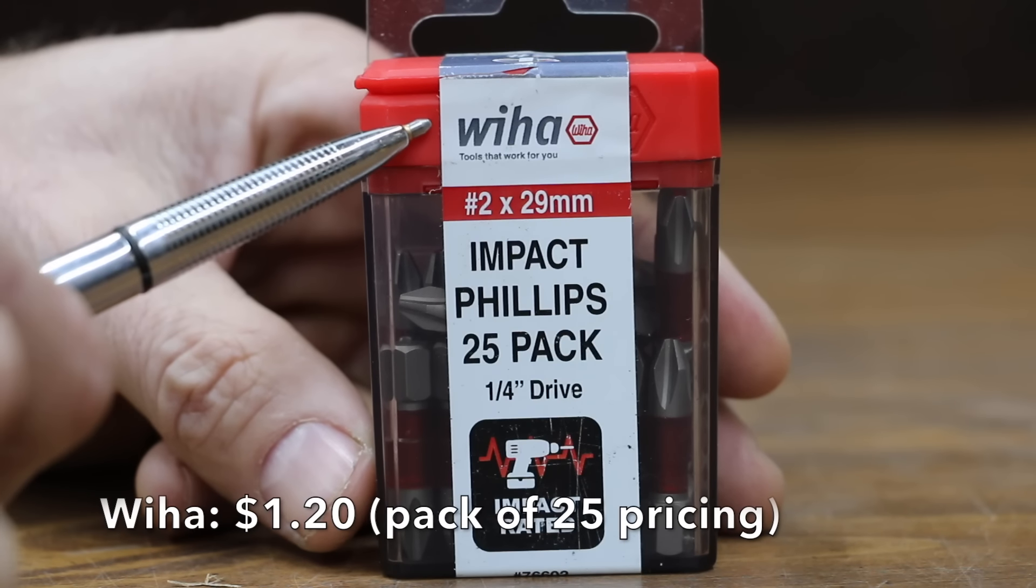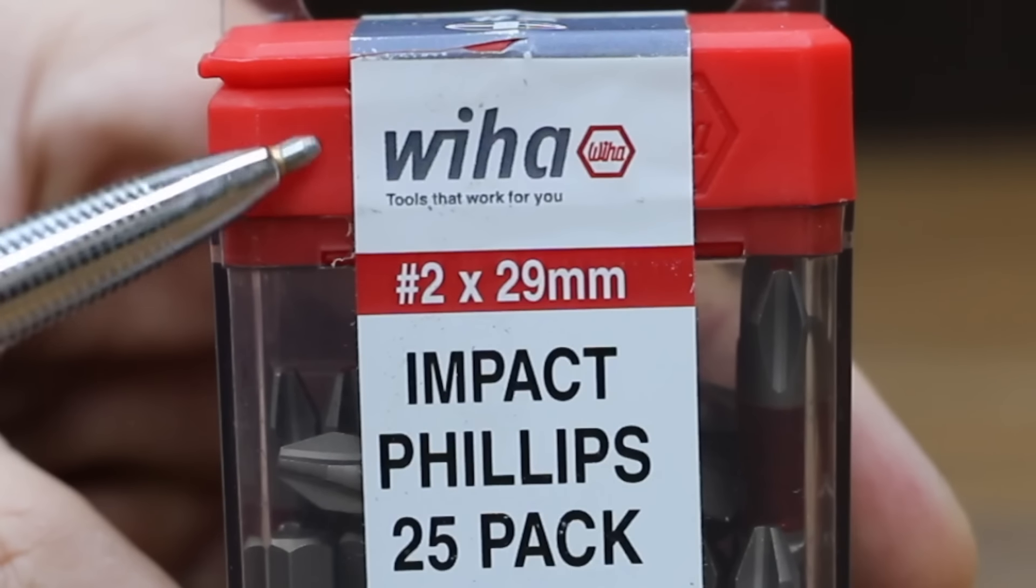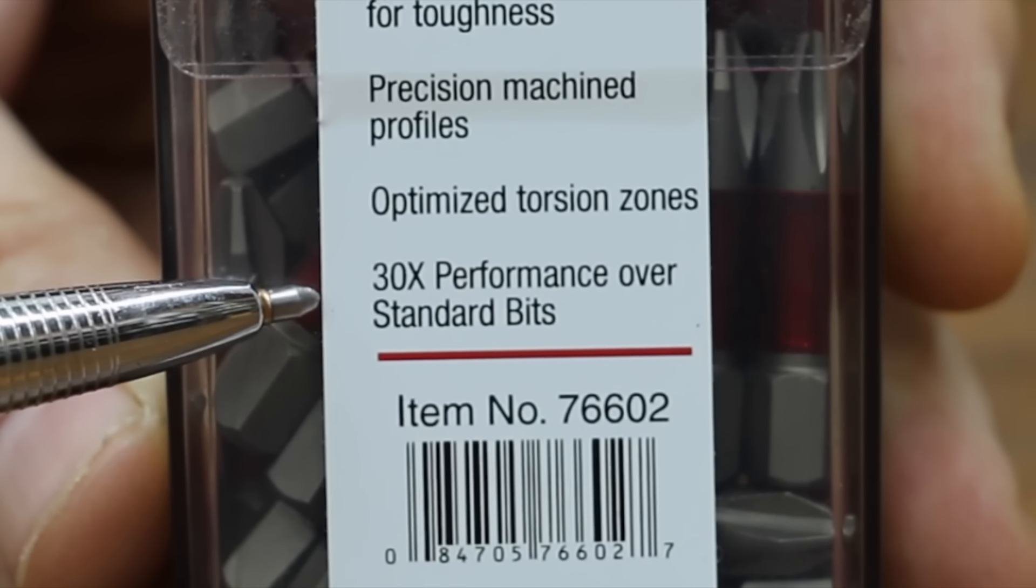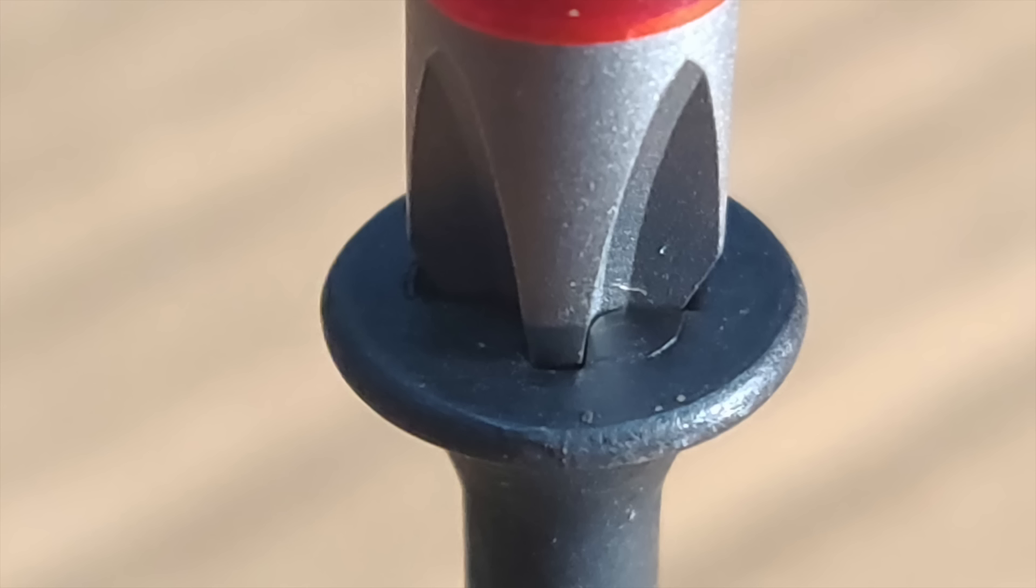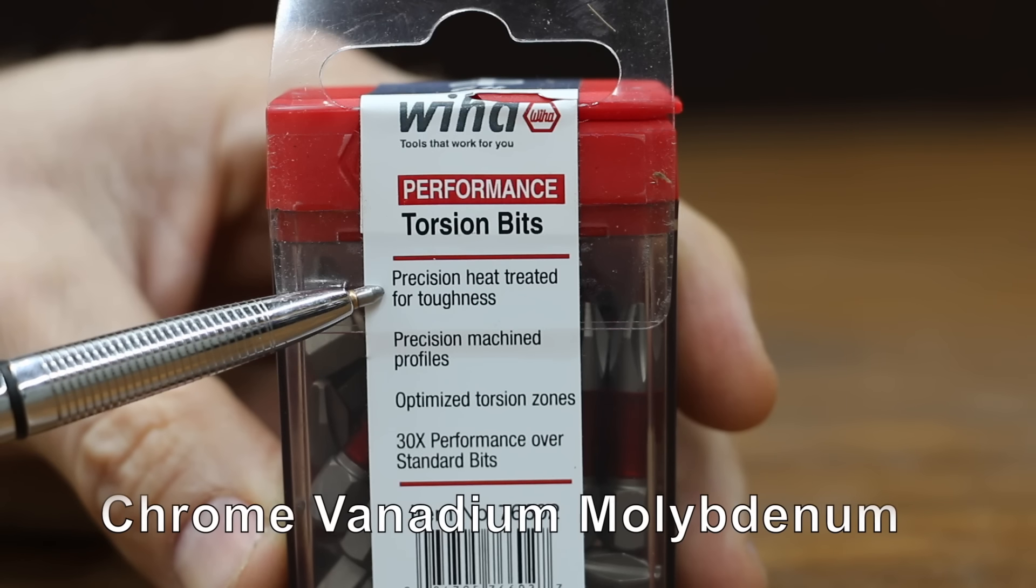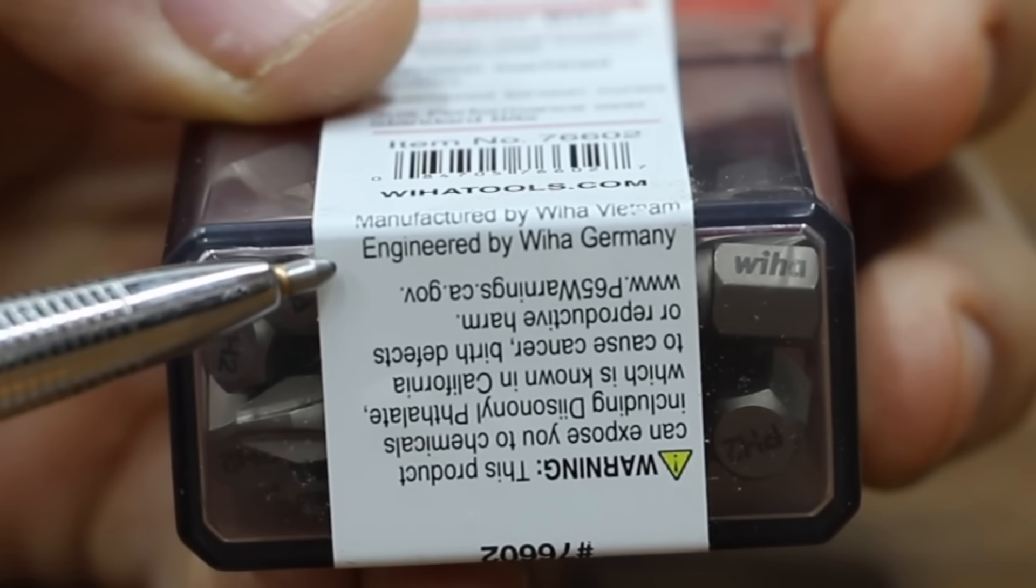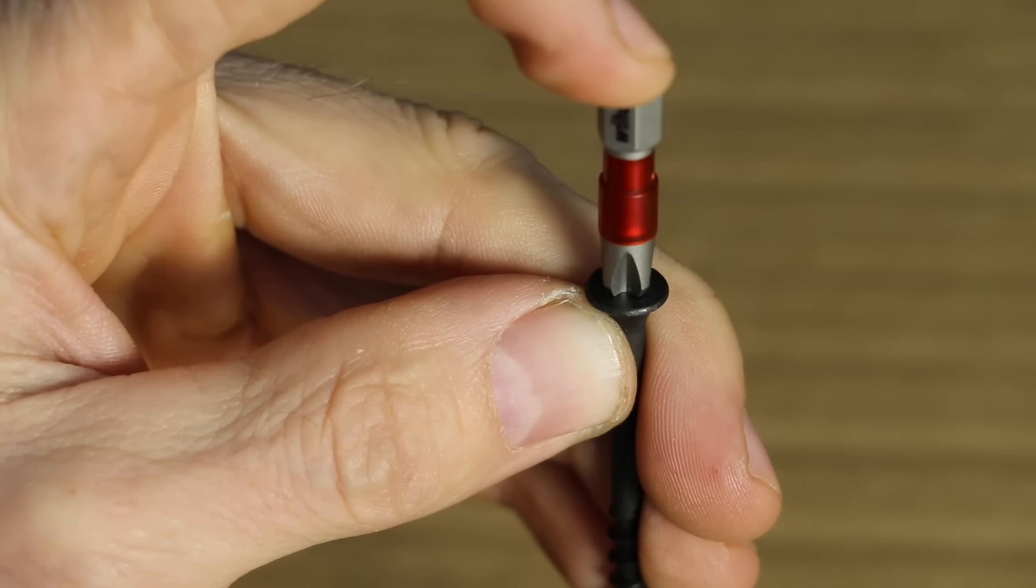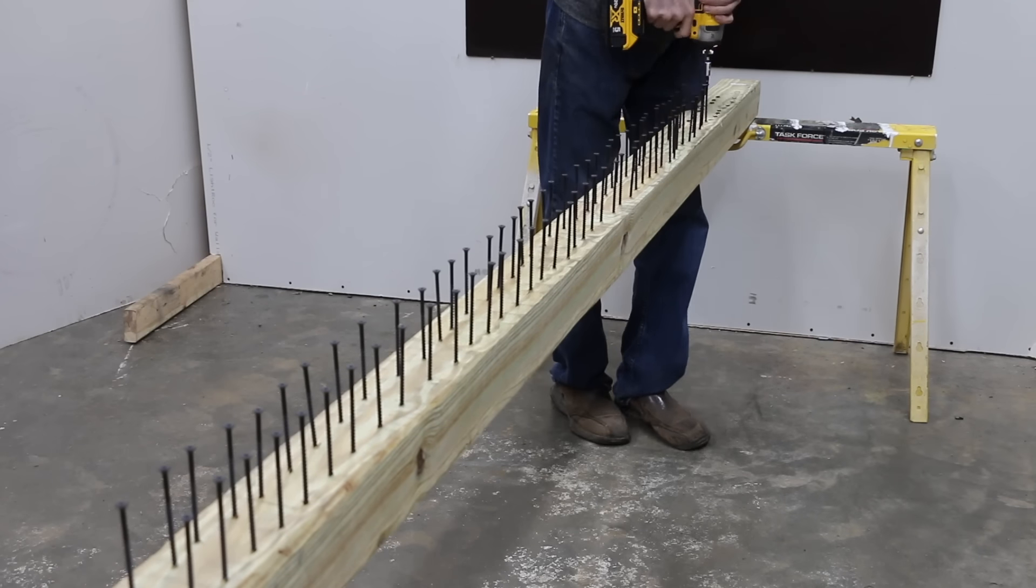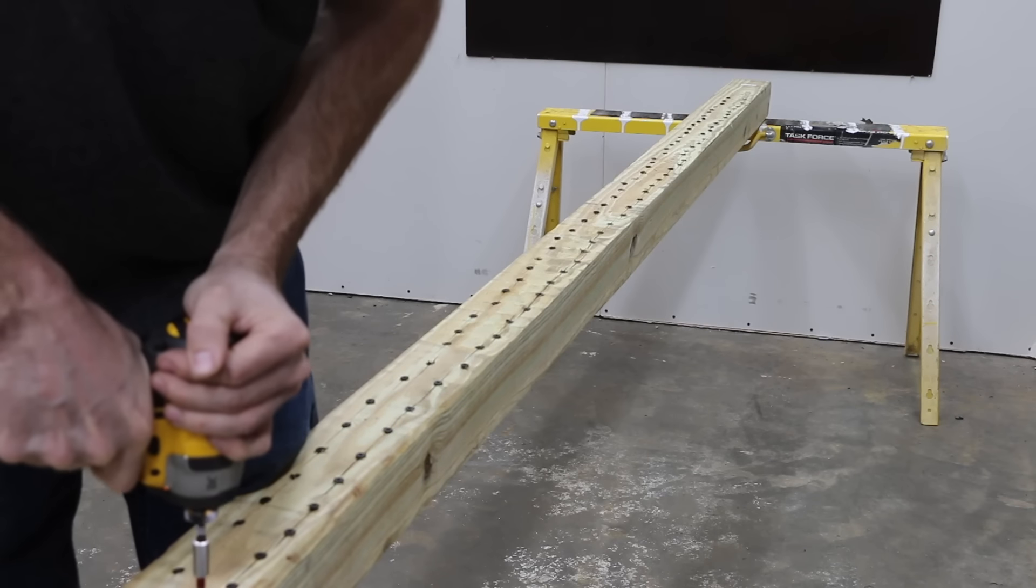Costing $1.20 each or very close to twice as much as the second most expensive brand is this Weha brand. It claims to offer 30 times performance over standard bits. It claims to have a special energy absorbing dual material design. Precision heat treated and premium chrome vanadium tool steel. Manufactured by Weha Vietnam. Engineered by Weha Germany. The Weha definitely has a little bit more wobble compared to some of the other brands. The Weha didn't have a perfect fit, but still did a terrific job and still seemed to be in great shape by the end of the test.